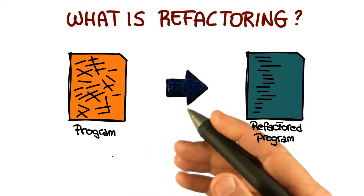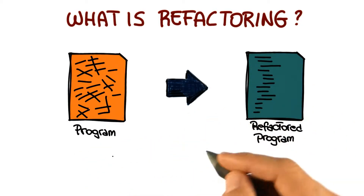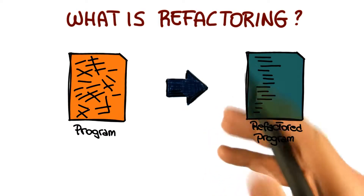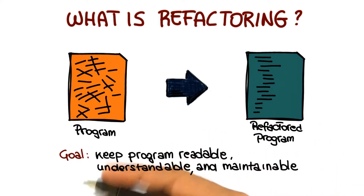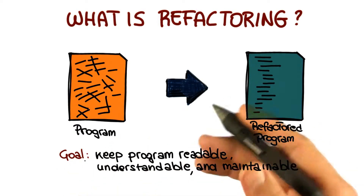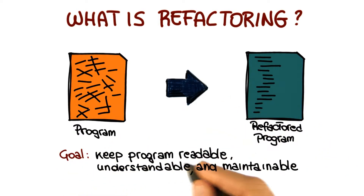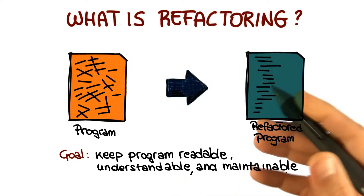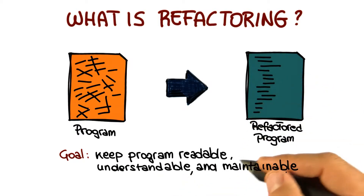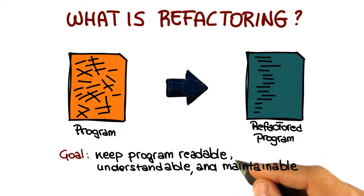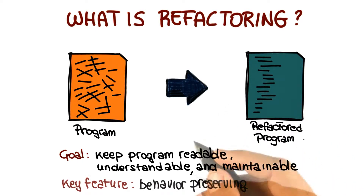A key aspect of refactoring is the fact that it should be semantics preserving. The main goal of refactoring is to keep the program readable, understandable, and maintainable as we evolve it — and to do this by eliminating small problems soon, so that you can avoid big trouble later.